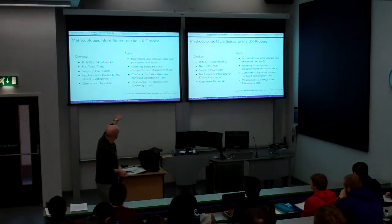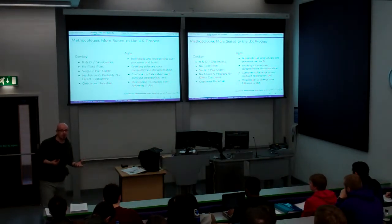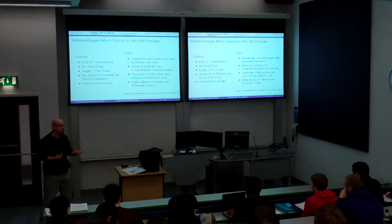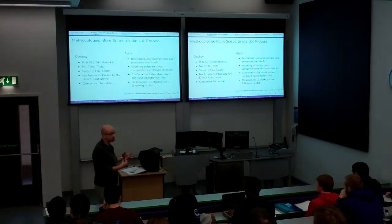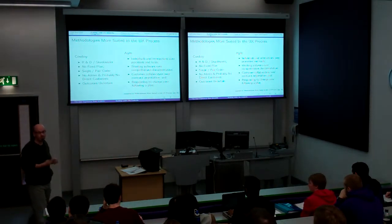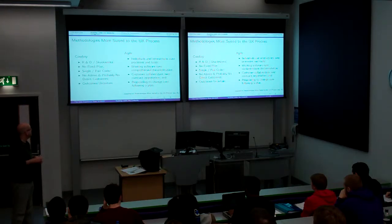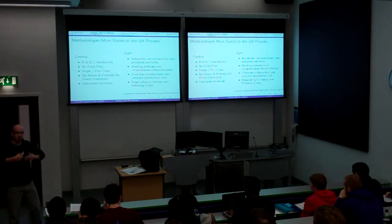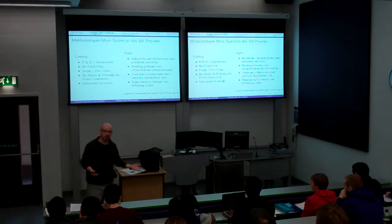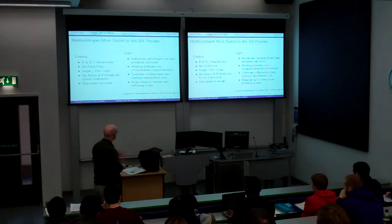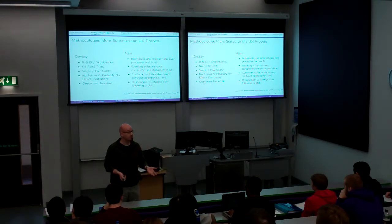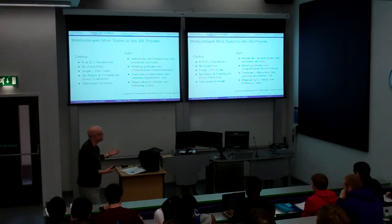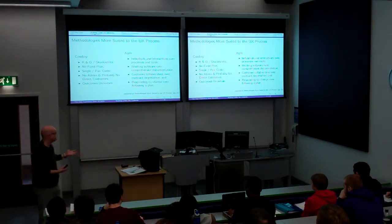The four agile principles are: individuals and interactions over processes and tools — that's right for user experience because it's about people; working software, which is like iterative prototyping that we do in user experience; customer collaboration, which is about collaborative and participatory design; and responding to change over following a plan, which is great for our kind of work because we need to respond to change a lot.